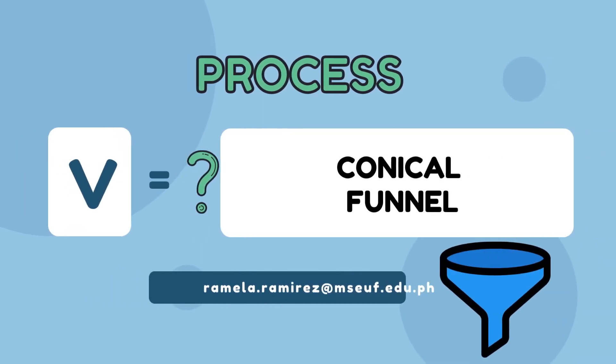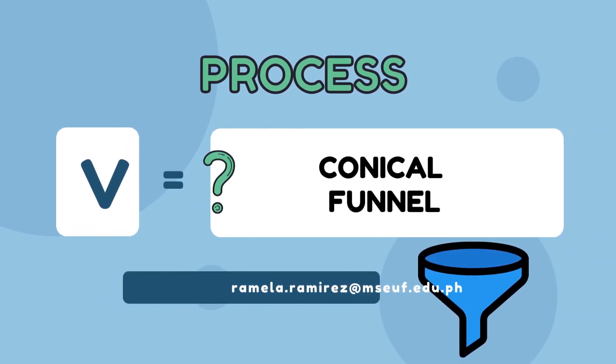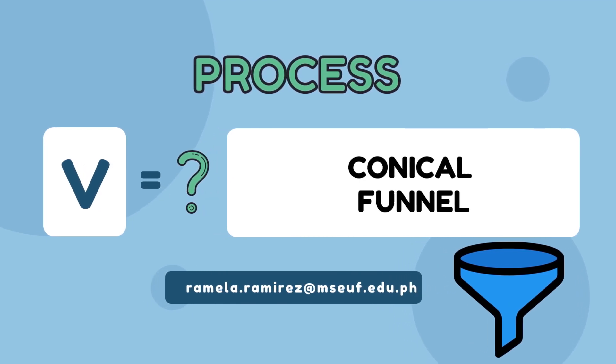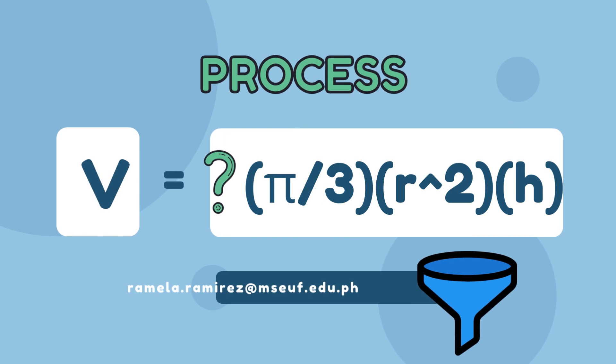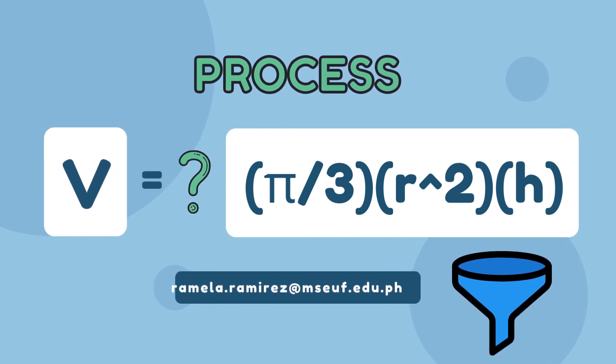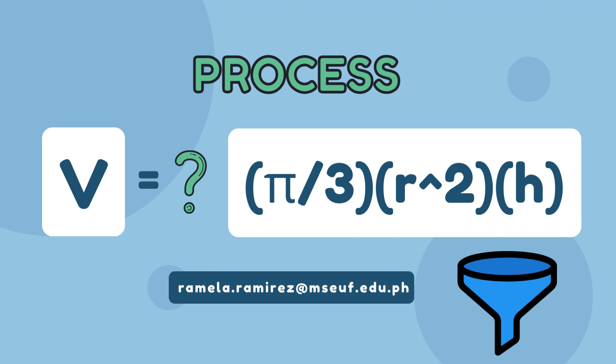As to the volume, the formula for the volume of the conical panel is one-third times pi times the quantity radius squared multiplied by the height, where r represents the radius, h represents the height, and the value of pi is the constant 3.1416.